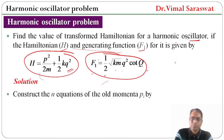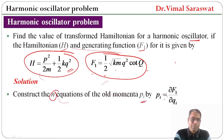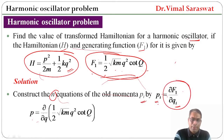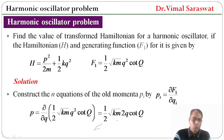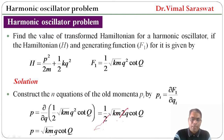Solution: construct the n equations of the old momenta p_i using p_i equals del F1/del q_i. So p equals del/del q of F1, where F1 equals (1/2)root(km) q² cot(Q). Differentiating with respect to small q: (1/2)root(km) times cot(Q) is constant, and the differential of q² is 2q. The 2's cancel, giving p equals root(km) q cot(Q).